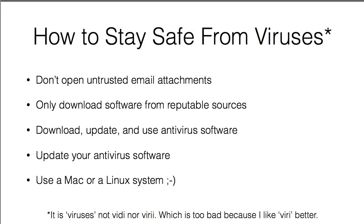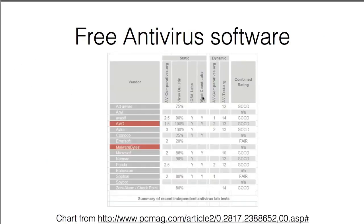Here's a chart of free antivirus software from PC Magazine. AVG was the one I used when I had a Windows system — it worked pretty well, was unobtrusive, and didn't take up a lot of resources. Microsoft's offering is also on there and works pretty well from what I understand. The chart shows ratings from different sources. I'm most familiar with AVG; one of my old jobs used Sophos, which was okay.